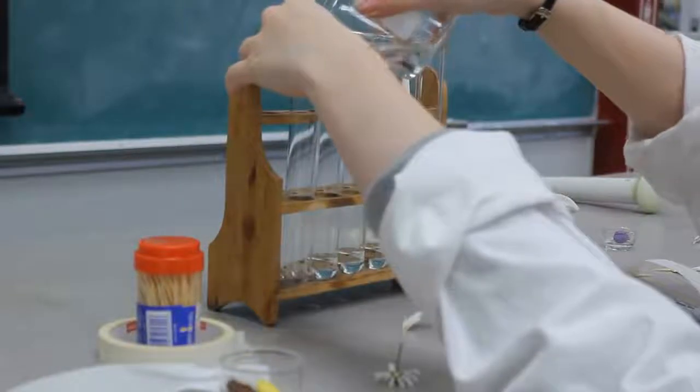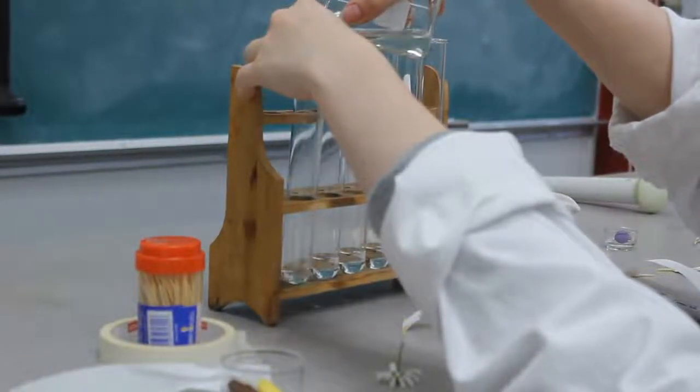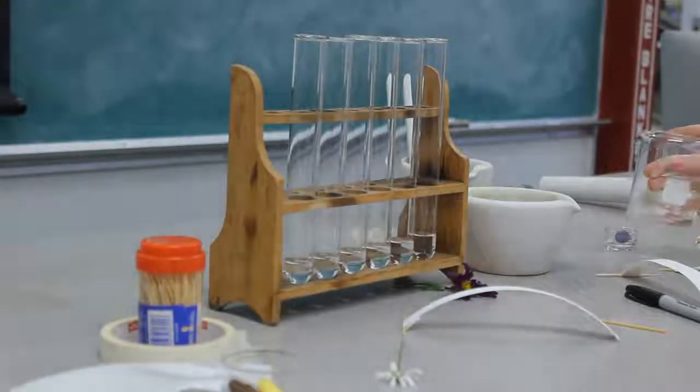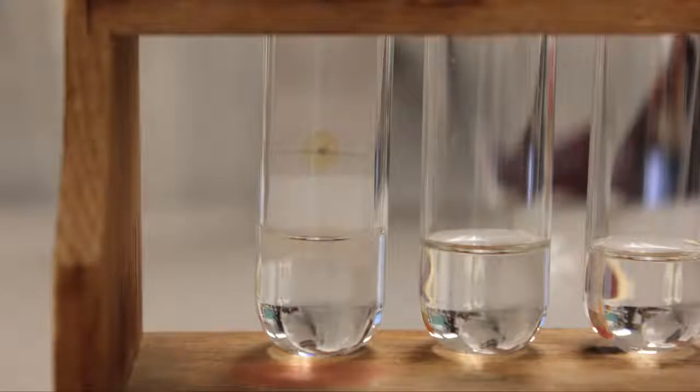Next, pour acetone into the test tubes so that it barely touches the bottom of the filter paper once it's inserted into the tube. Depending on how long your strips are, it's about a half an inch of acetone at the bottom of the test tube.